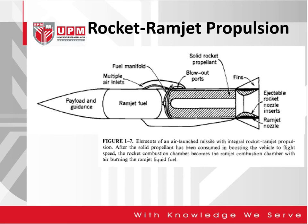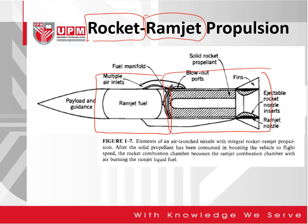The rocket can also be combined with a ramjet. We have a rocket as well as ramjet propulsion, where air is being bled into the vehicle, and then there is also a rocket element. Elements of an air-launch missile normally use this technology with integral rocket ramjet propulsion. After the solid propellant has been consumed, they normally use solid rocket propellant first before activating the ramjet combustion chamber.